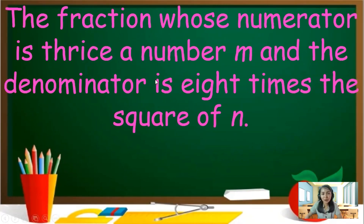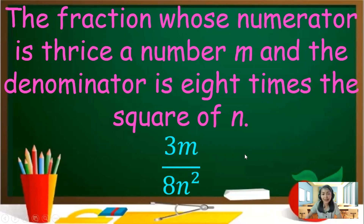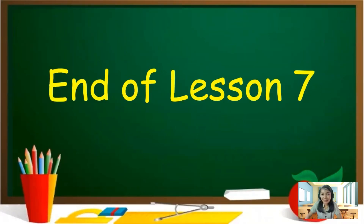Next: 'The fraction whose numerator is thrice a number m and the denominator is 8 times the square of n.' Fraction means fraction form. Thrice m is 3m — that is the numerator. The denominator is 8 times the square of n, which is 8n squared. Your answer is 3m over 8n squared. That ends our Lesson 7.